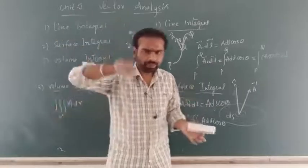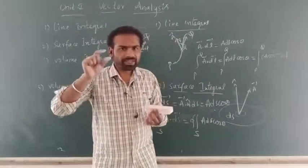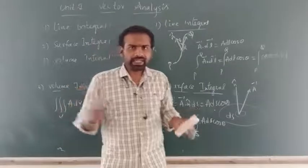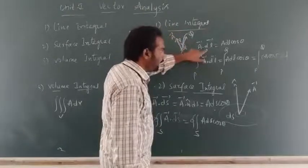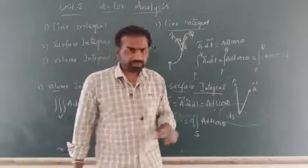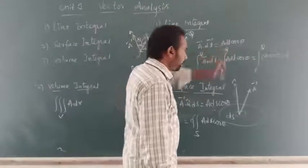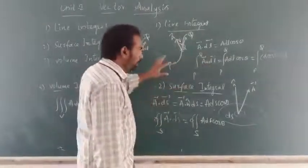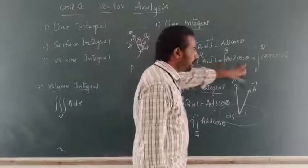What is line integration? We already discussed the flux definition. Flux is simply the dot product of surface area and vector. Similarly here, the dot product of A-bar and the small element DL gives the line integration per small element DL, which is A·DL = A DL cosθ. So the line integration from P to Q for the entire curve is given by ∫(P to Q) A-bar · dL = ∫(P to Q) A dL cosθ.